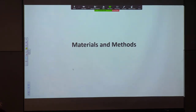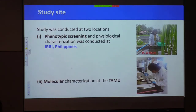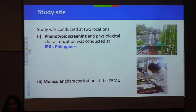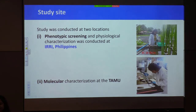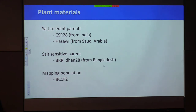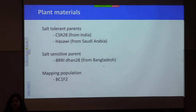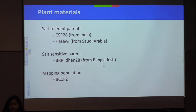I went to the Philippines in 2018 to conduct my phenotyping study. All phenotypic screening and physiological parameters were completed at IRRI, and then I came back to Texas A&M in 2019 to start my molecular work. Two plant materials were used: CSR 28 from India, which is a salt tolerant parent, and Hassawi from Saudi Arabia, also a salt tolerant parent. The common recurrent parent is BRRI Dhan 28 from Bangladesh — a mega variety with all good characters except low salinity tolerance.